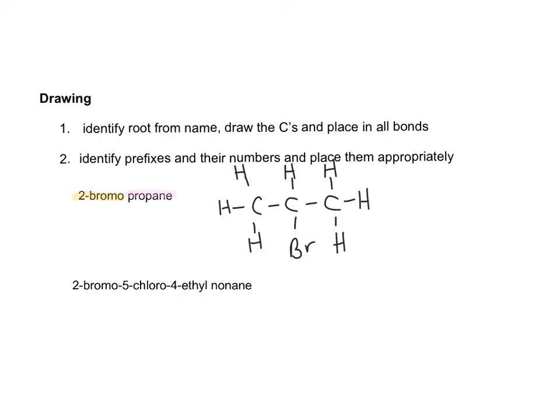So our root, our longest carbon chain, is going to be 9. So draw out your carbons, put in your bonds, and get ready to place your side groups. So I always draw out my carbon chain first, then I go back in and put in my bonds.